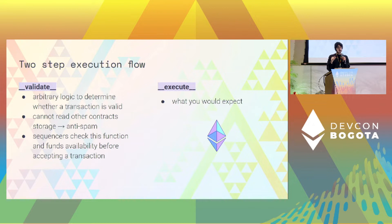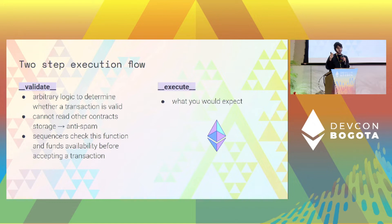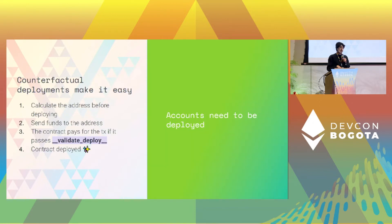There are a few limits here — for example, you cannot read other contracts' storage. This is to prevent spam: picture a scenario where many transactions depend on the storage of another contract, that contract changes its storage and invalidates lots of transactions. So this validate function is used by sequencers to know in advance whether a transaction is valid. Unlike an EOA where you simply verify the signature, here you need to execute some code. The execute step does what you would expect.